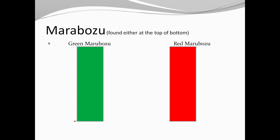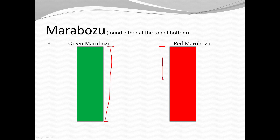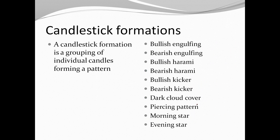A green marubozu shows that price opened at the bottom and buyers pushed it all the way up to the close of the candle. A red marubozu shows that price opened high and sellers pushed it all the way down to the close of that candle.